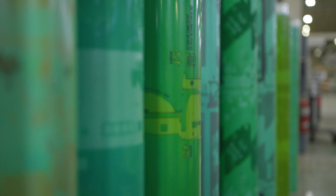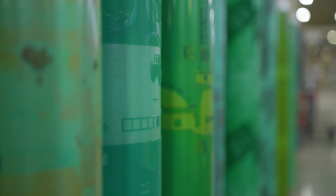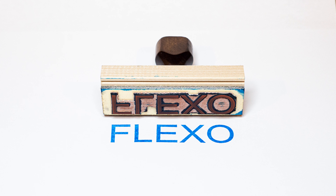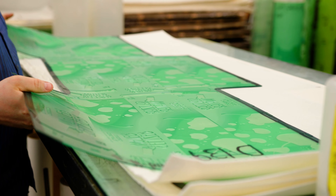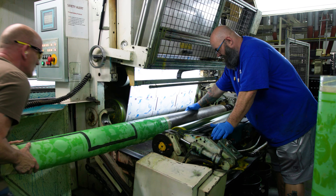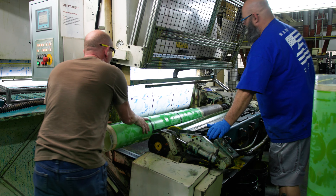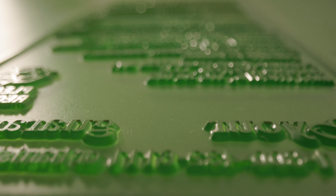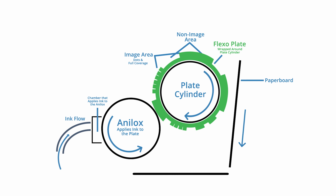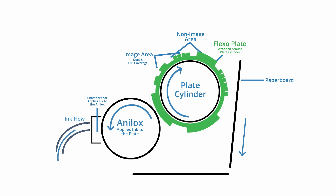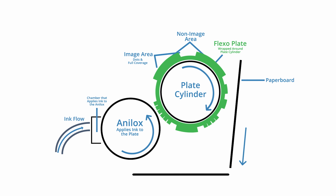In order to explain Flexo plates it helps to think about a rubber stamp. Both have a raised image but the similarity stops there. Here's a Flexo plate in the flat before it gets mounted around its cylinder and its cylinder mounted into the press. Just like with that rubber stamp, the image area is the raised part of the plate and the non-image area is the recessed part. Ink is applied to the image areas by an anilox roller and then the ink is transferred to the paperboard as it passes through the press. That paperboard is also called the web.